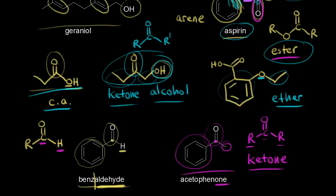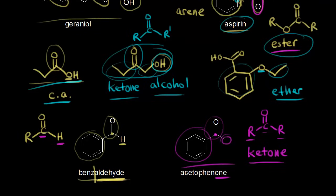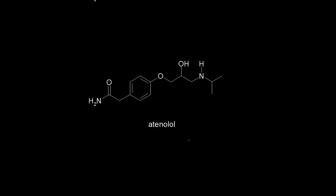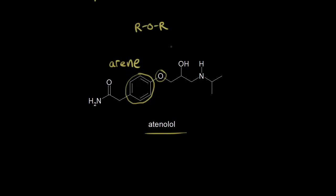Finally, let's look at one large compound with lots of different functional groups: atenolol, a beta blocker and heart medication. Here is the aromatic ring, so an arene is present. Next, we have an oxygen with an R group on one side and an R group on the other side — R-O-R — so that's an ether.